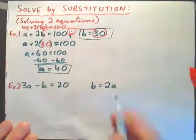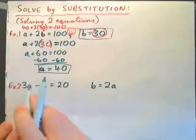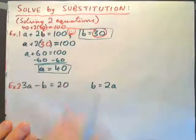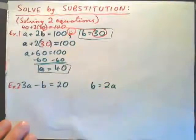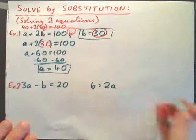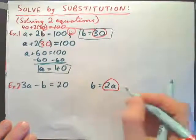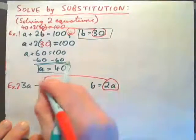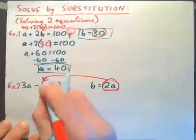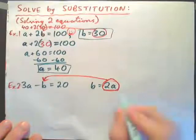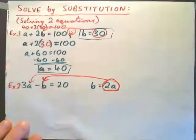A substitution, as we see it, will usually be plugging in an expression for a variable. In this case, we have three apples take away a banana leaves 20 cents, and a banana equals two times an apple — a banana costs twice an apple. So we could take this expression for b, which is 2a, and substitute that in. The key concept is: do I plug the 2a in for b, or do I plug the 2a in for a? That's the trick.